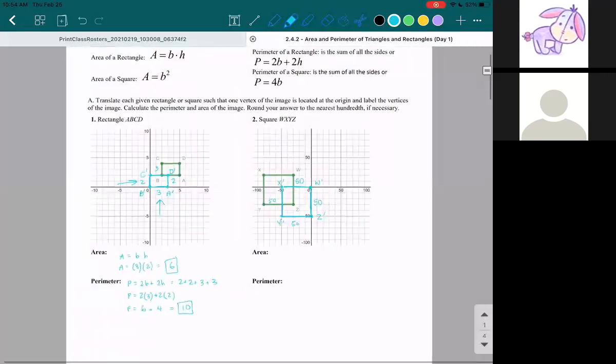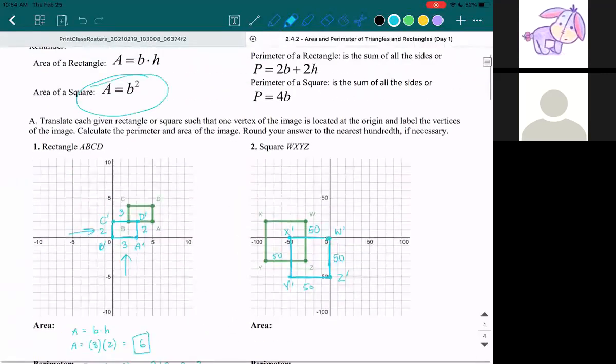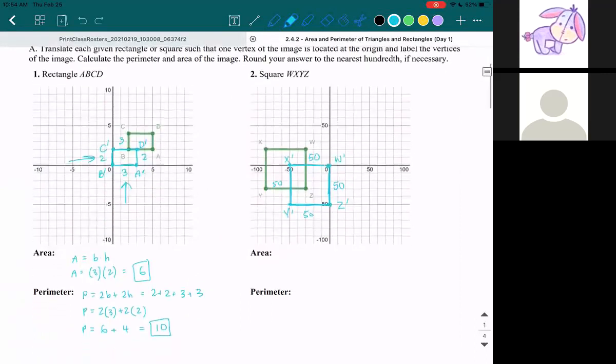So area of a square, A is equal to b squared. Area is equal to base squared. So our base is 50, and when we square it, we get 2500. Your final answer for the area should be 2500.